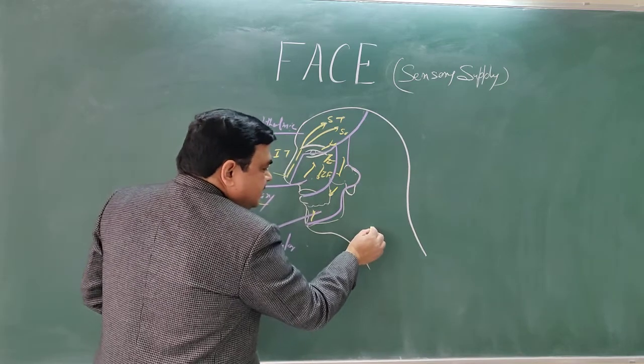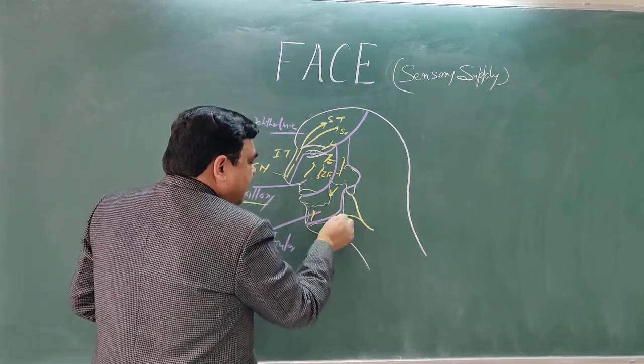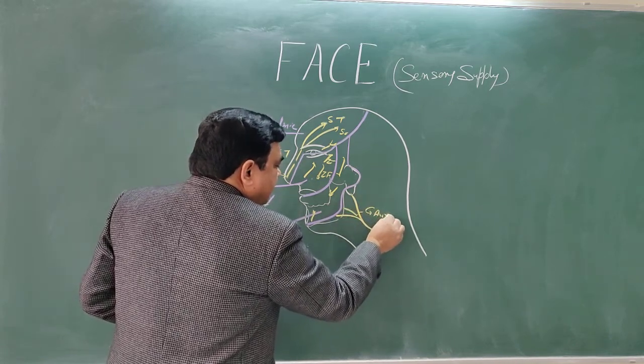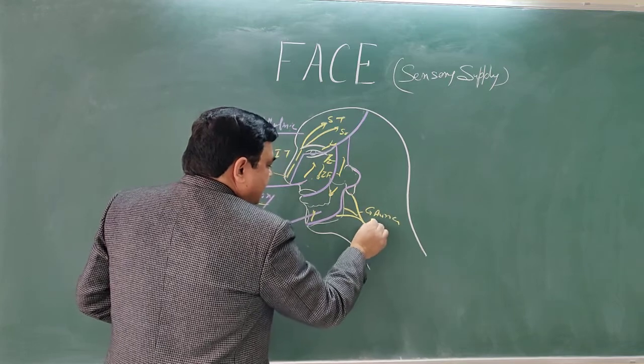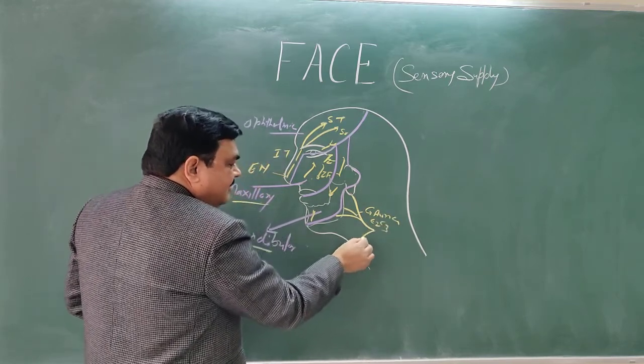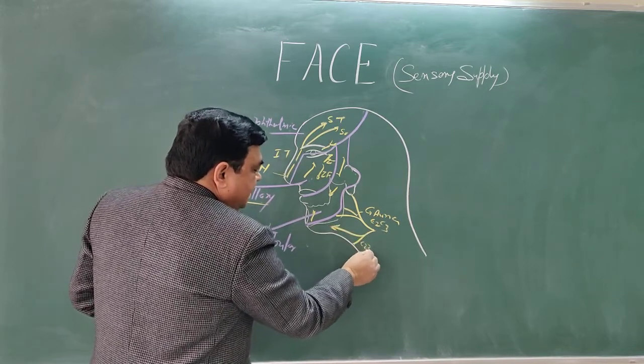And here is C2 and C3. This is great auricular nerve. Here is transverse cervical nerve, anterior cervical. This ascending branch would be C2, C3.